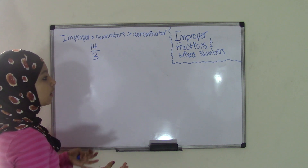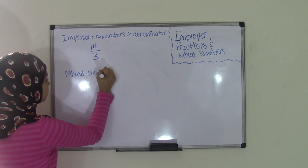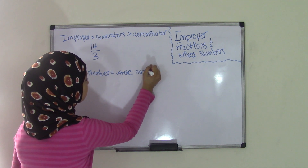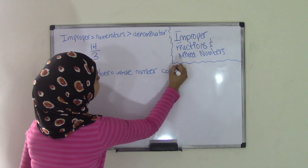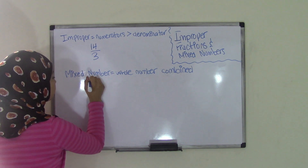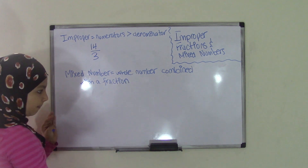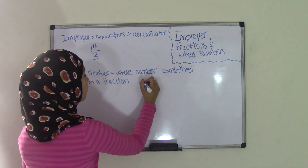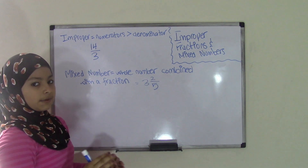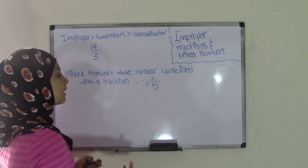A mixed number, on the other hand, is just a whole number combined with a fraction. An example of a mixed number could be 3 and 2 fifths, because 3 is the whole number and 2 fifths is a fraction, so together it becomes 3 and 2 fifths, which is a mixed number. Those are the basic definitions for each of these terms.